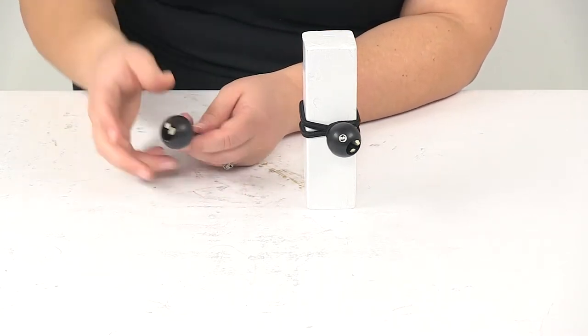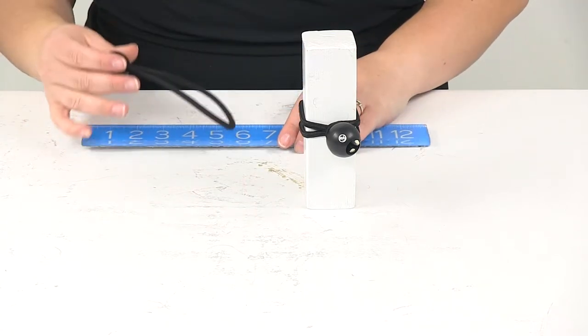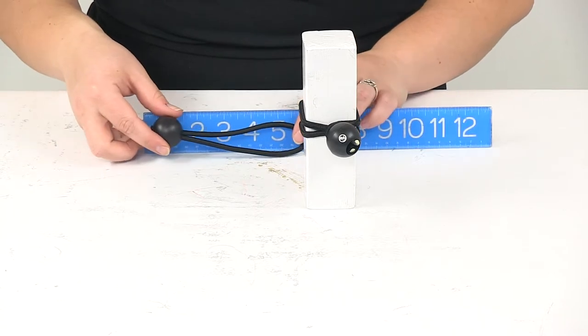Again, this does come with two tie downs. The overall unstretched length is going to be about six inches.